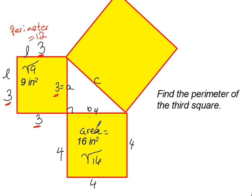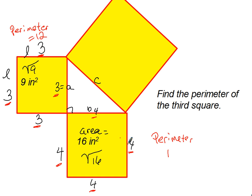The perimeter of the second square is 4 plus 4 plus 4 plus 4 — that's 4, 8, 12, 16. So the perimeter of the second square is 16 units. The perimeter of the first square is 12 units.